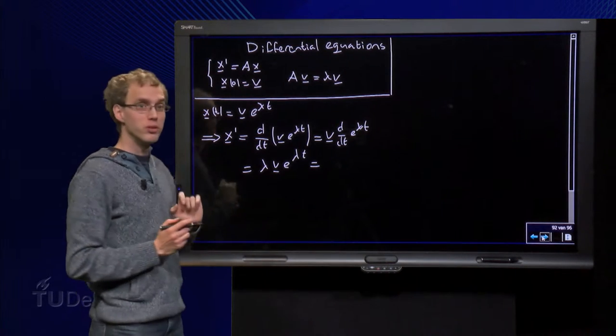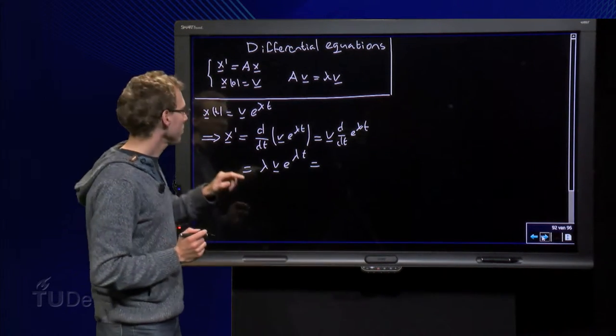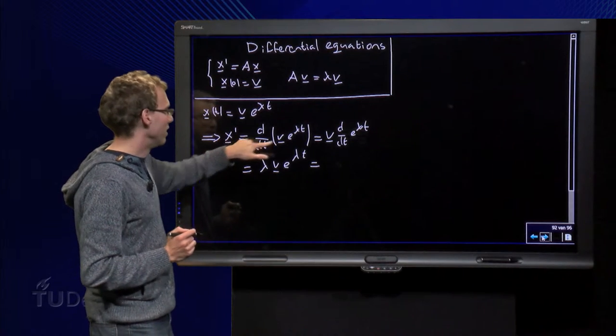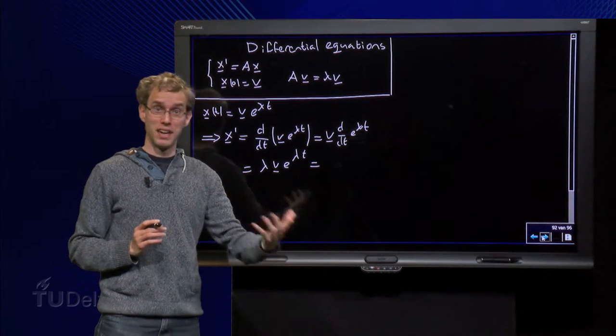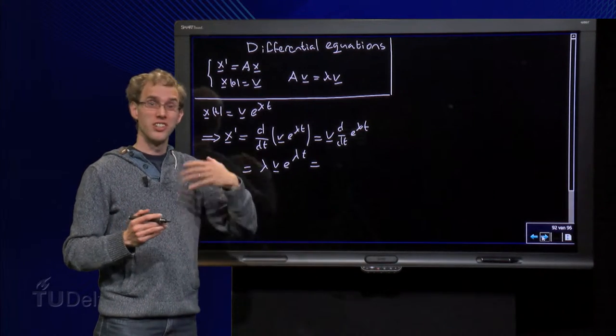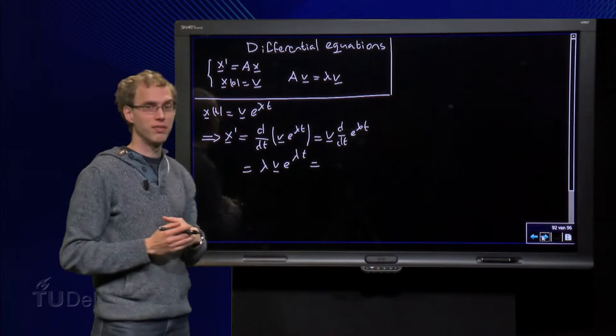So what happens if we compute x prime? Well, x prime is d/dt of x. However, v is an eigenvector, it is a constant vector, it does not depend on t, so it can be taken out of differentiation.